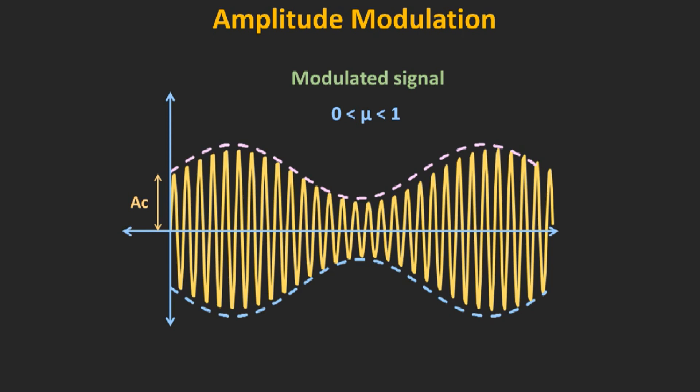In this video, let's see one of the most widely used demodulation techniques for the AM signal. This envelope detector is a non-coherent type demodulation technique for the AM signal.